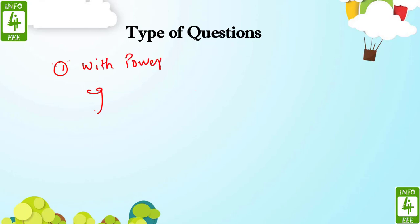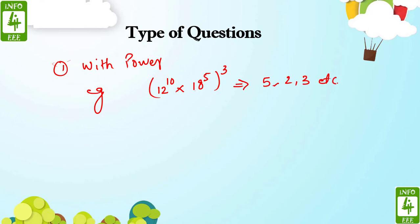For example, they may give you an expression like 12 to the power 10 into 18 to the power 5, to the whole power 3. They may ask you to find the highest power of 5 in this expression, or the highest power of 2, highest power of 3 — they may ask of any number.